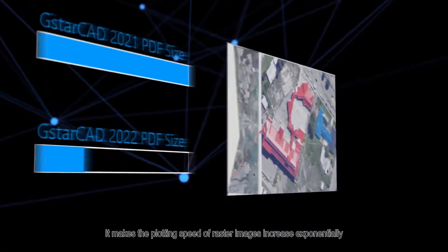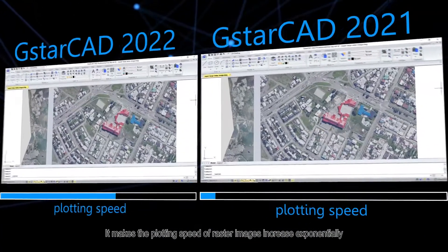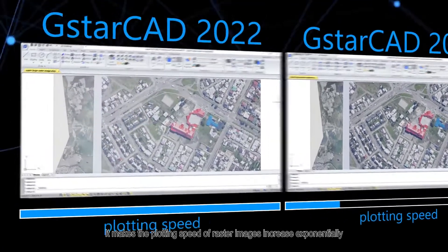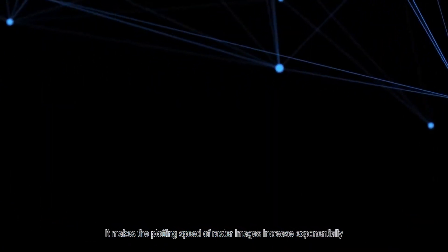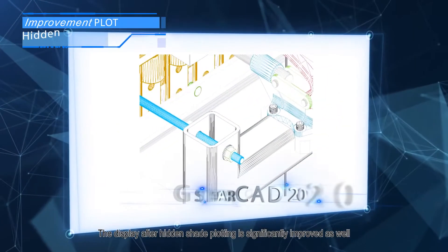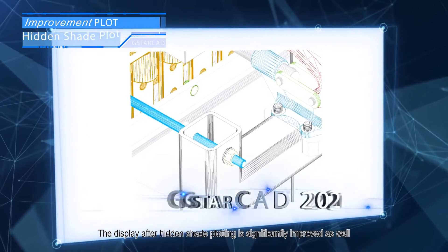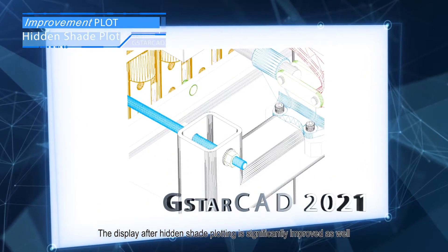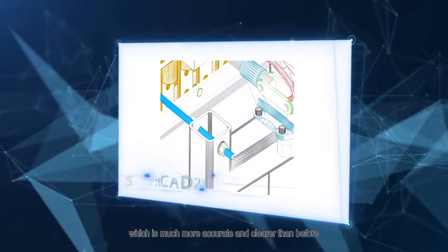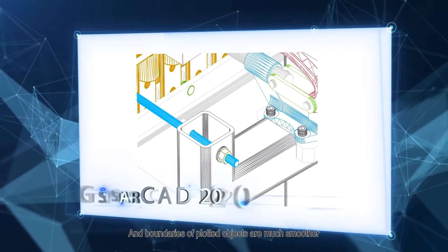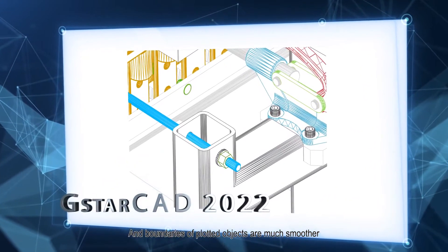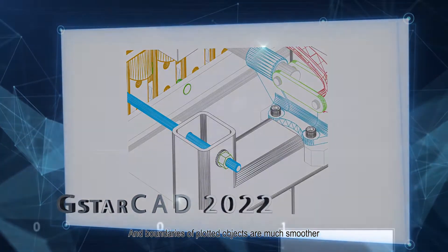It makes the plotting speed of raster images increase exponentially. The display after hidden shade plotting is significantly improved as well, which is much more accurate and clearer than before. And boundaries of plotted objects are much smoother.